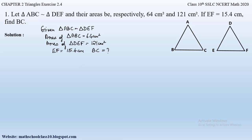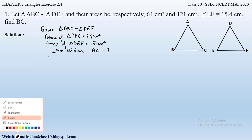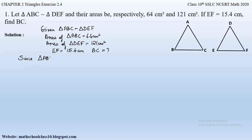Looking at what is given, we have to apply theorem 2.6. If two triangles are similar — that is, if triangle ABC is similar to triangle DEF — then we apply theorem 2.6, which states that the ratio of the areas of two similar triangles is equal to the square of the ratio of their corresponding sides.